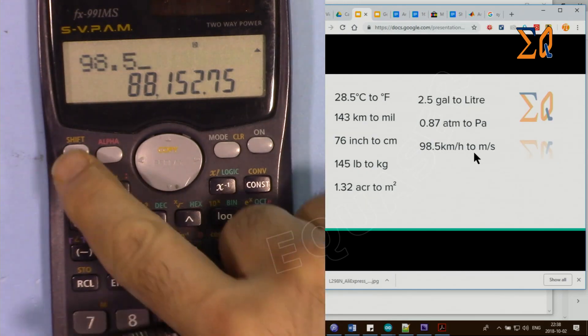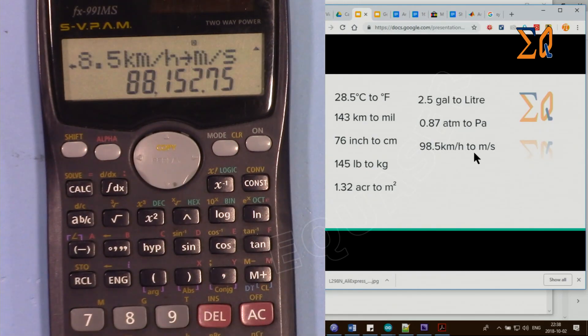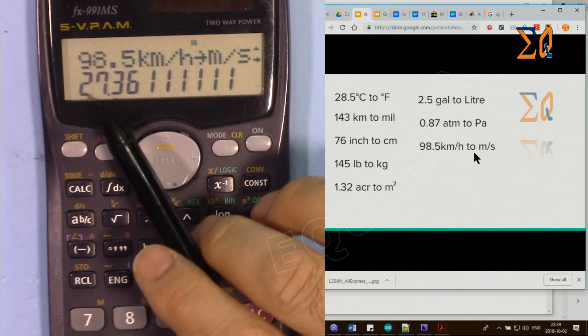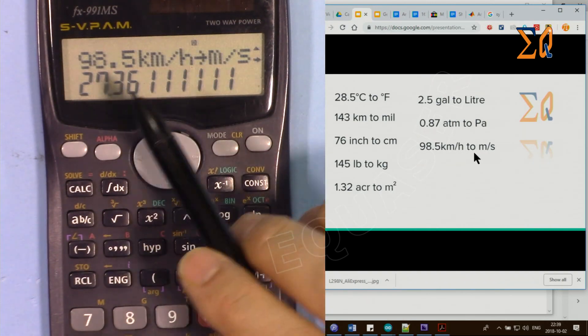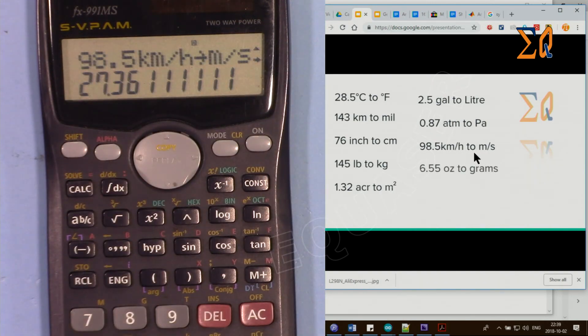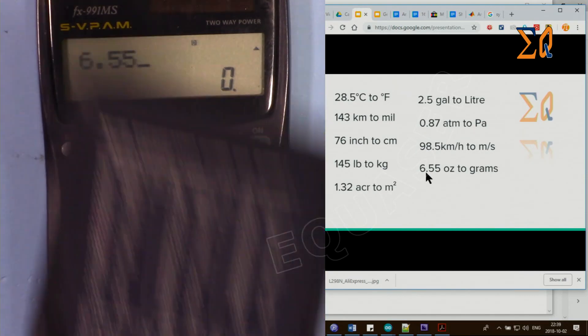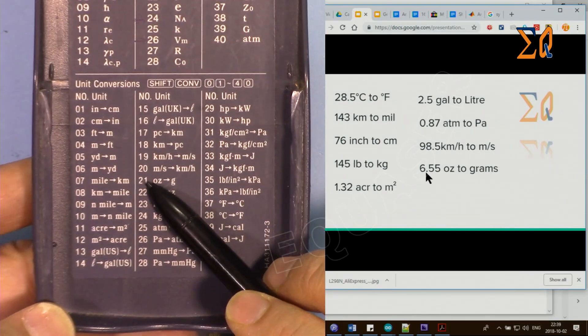Sometimes you need to convert ounces to grams. 6.55 ounces to grams is number 21. 6.55, shift, convert, 21, gives you 185.689 grams.